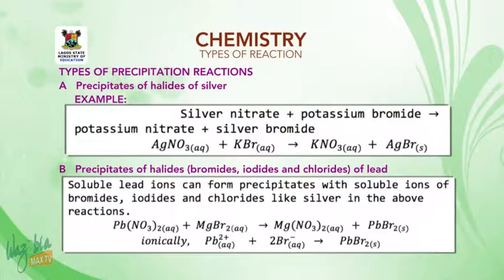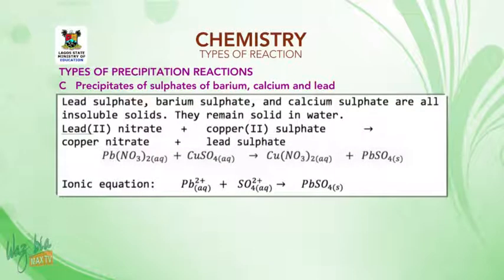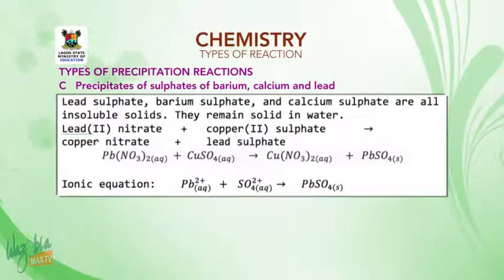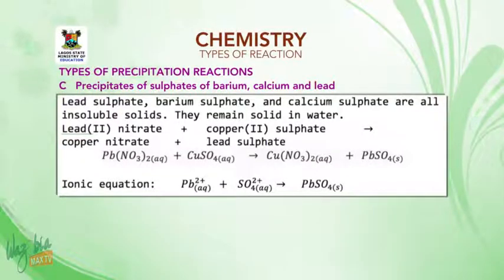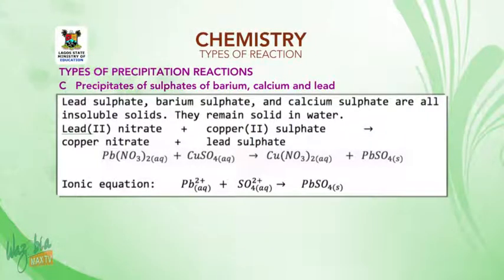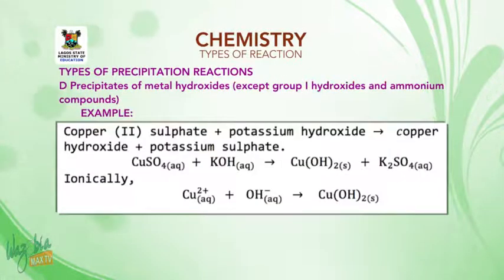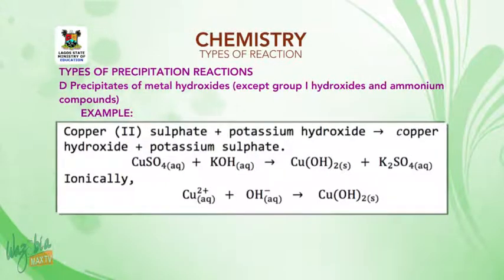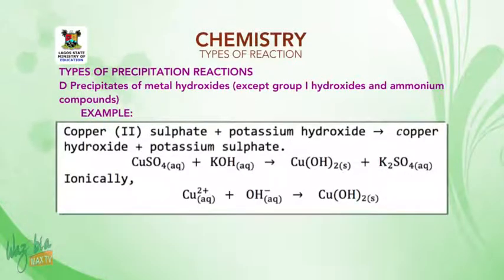Another precipitate type: sulfate of barium, calcium, and lead. Lead sulfate, barium sulfate, and calcium sulfate are all insoluble solids — they remain solid in water. For example, lead(II) nitrate plus copper(II) sulfate gives copper nitrate and lead sulfate. We can also have precipitate of metal hydroxides, except group 1 hydroxides and ammonium compounds which are soluble. For example, copper(II) sulfate plus potassium hydroxide gives copper hydroxide plus potassium sulfate.